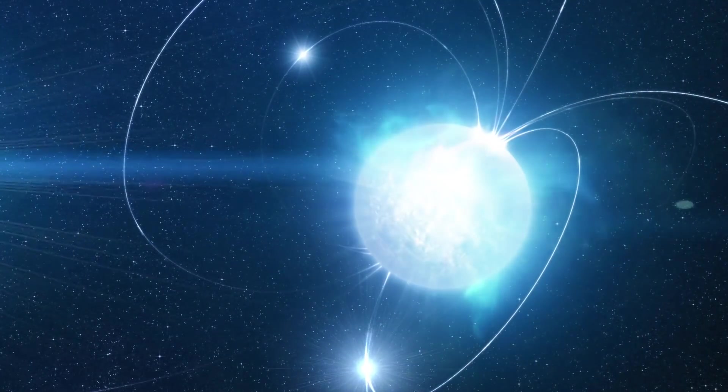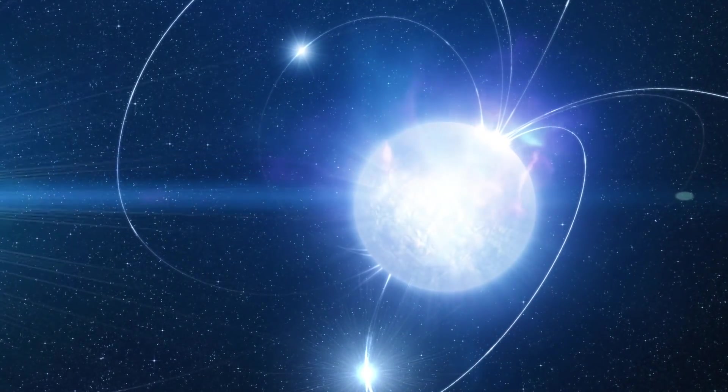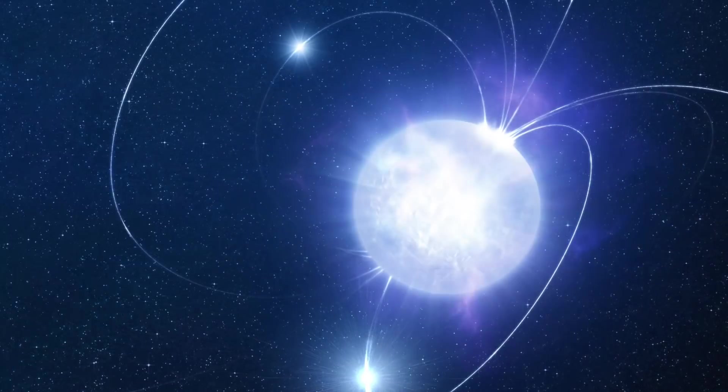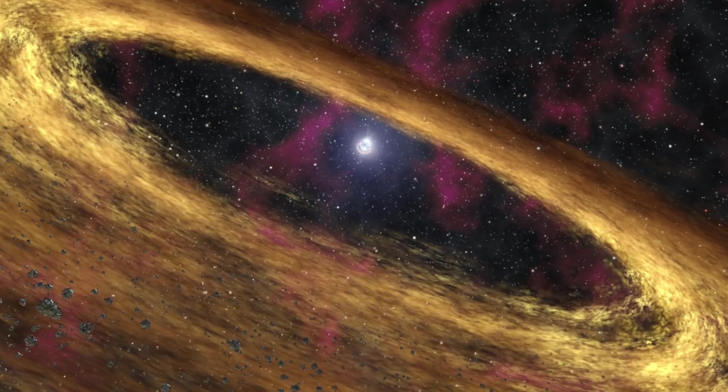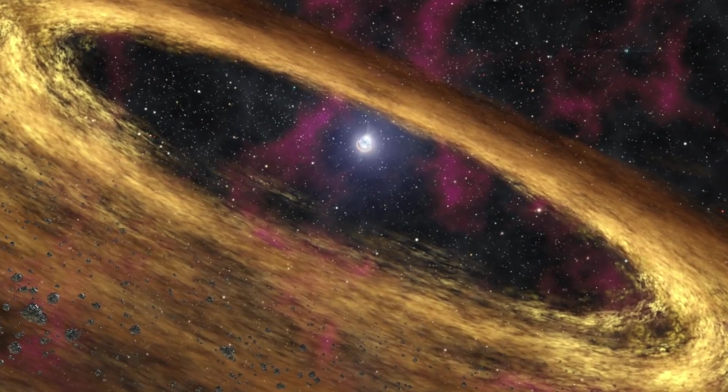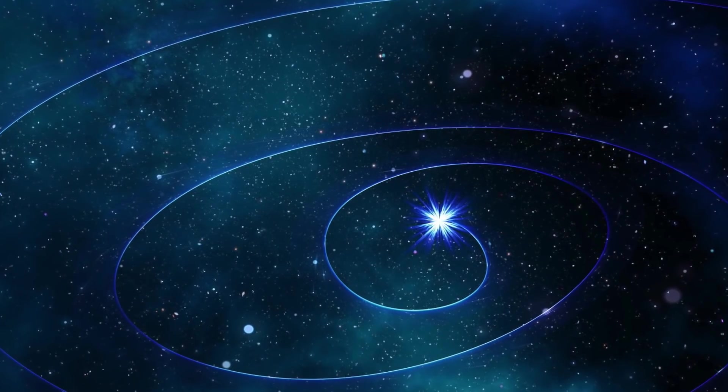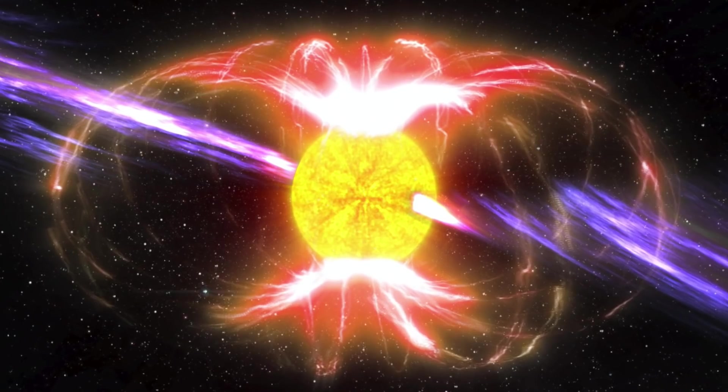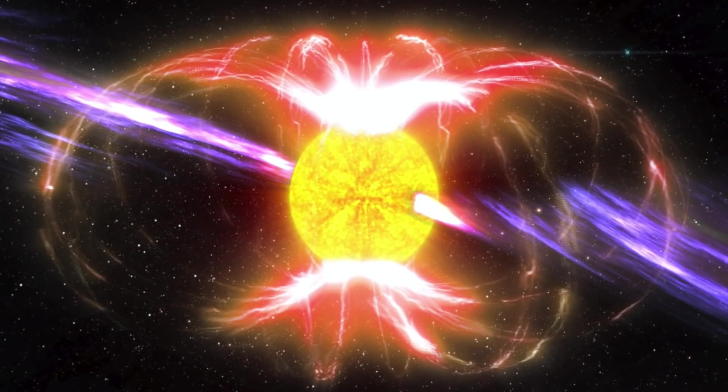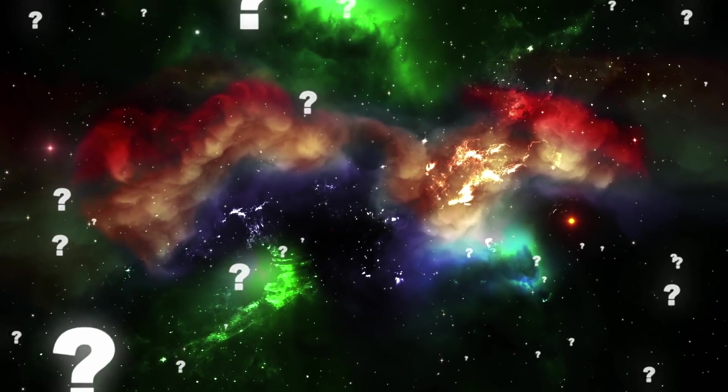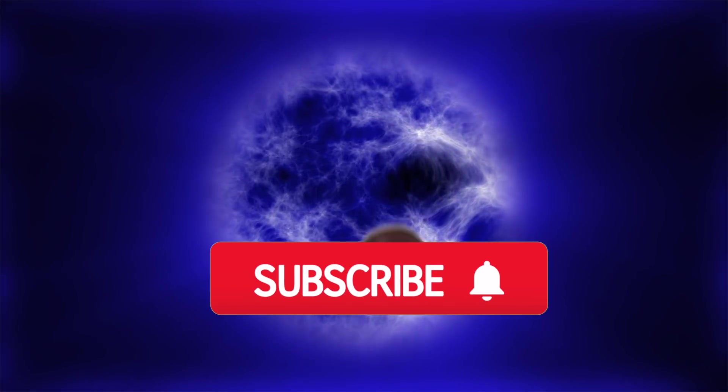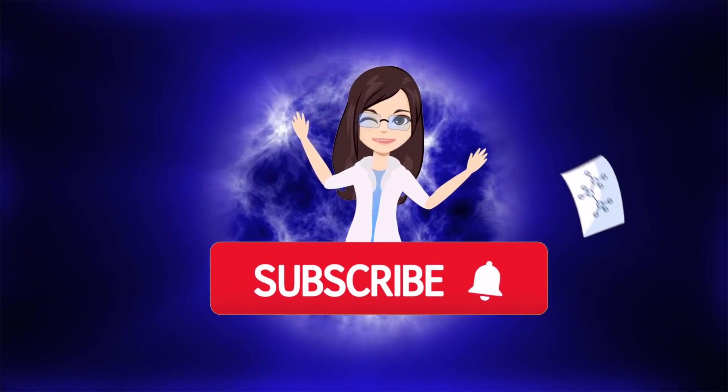Simply put, FRB 121102 released energy in such quick succession, it had to come directly from its surface. While the findings can help guide further research, FRBs and the bodies that caused them remain largely a mystery. If nothing else, the study provides a good starting point for learning more about them. What do you think could be causing these ongoing explosions? Let me know in the comments below and be sure to subscribe if you haven't already! We've got lots more videos coming up!